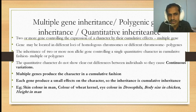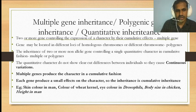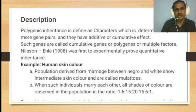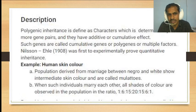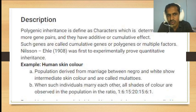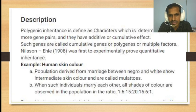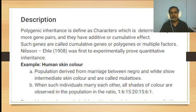We will now study skin color in humans in detail. Polygenic inheritance is defined as a character determined by more than two or more pairs of genes that have additive or cumulative effects. Such genes are called cumulative genes, polygenes, or multiple factors. This theory was first experimentally proved by Nielsen Eagle in the year 1905.